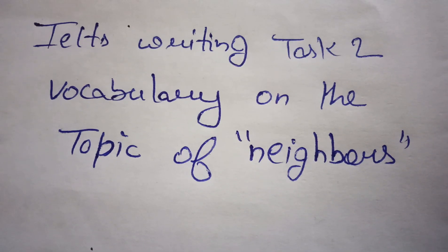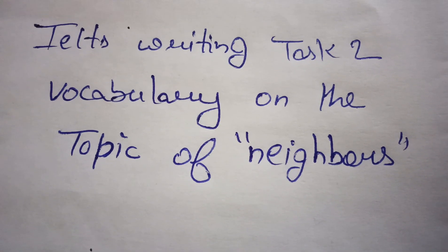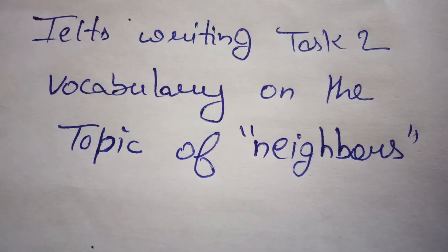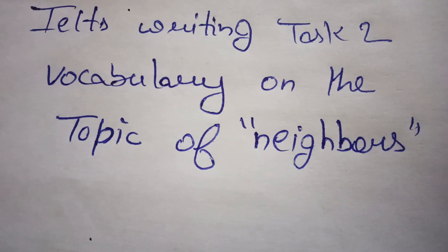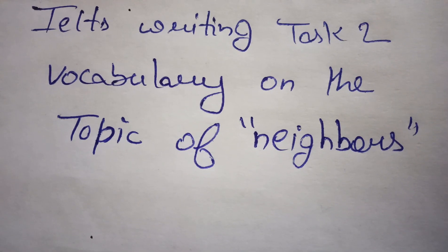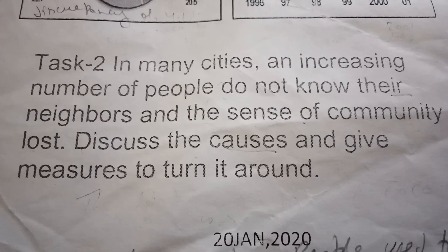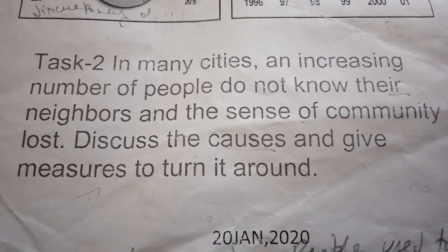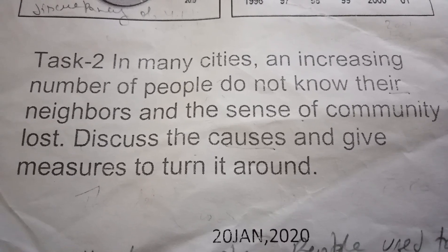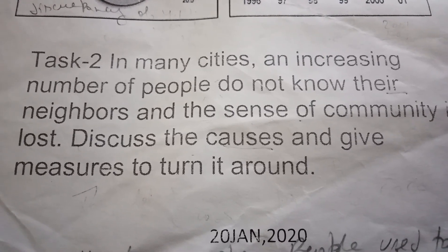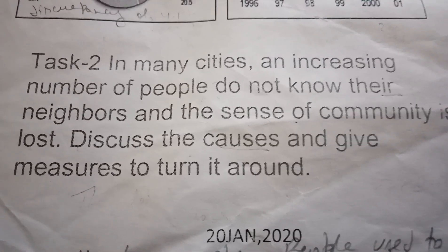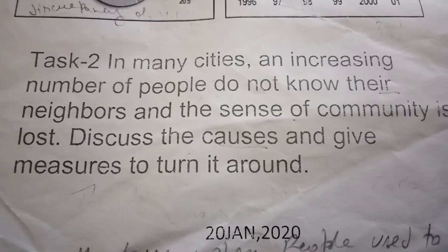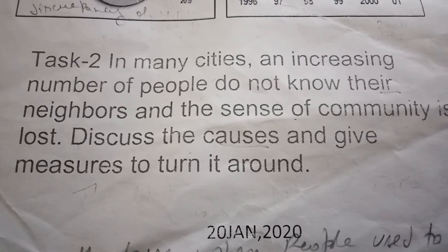Hello friends, my name is Pravinder Kaur. Please subscribe to my channel if you get benefit from my videos. Today we are looking at Writing Task 2 vocabulary on the topic of neighbors. The Task 2 question is: In many cities, an increasing number of people do not know their neighbors and the sense of community is lost. Discuss the causes and give measures to turn it around.